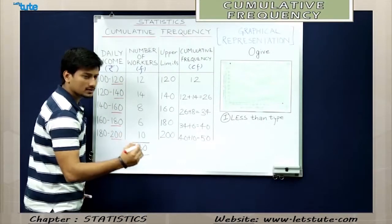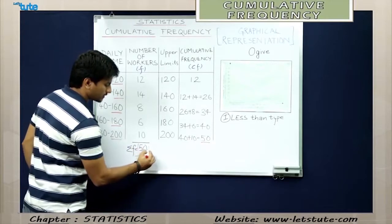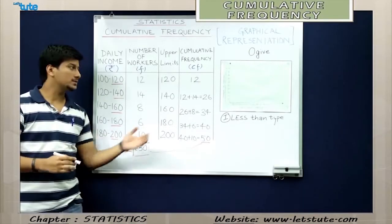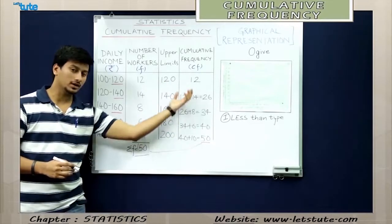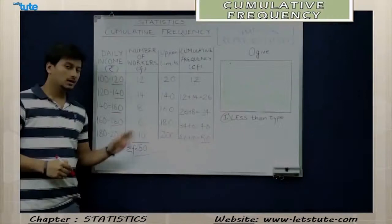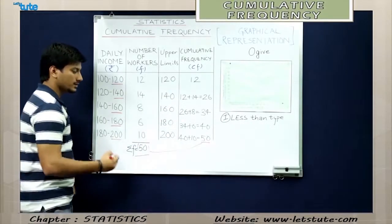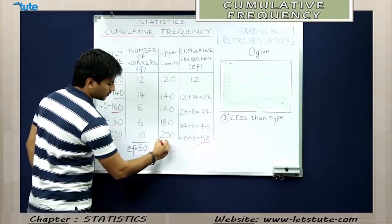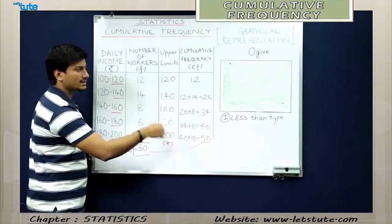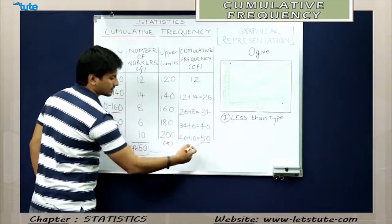After forming the columns for upper limits and cumulative frequencies, we represent the data in a graph. The upper limits will be represented on the x-axis because they are independent variables, whereas the cumulative frequency is a dependent variable and will be placed on the y-axis.